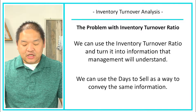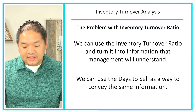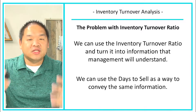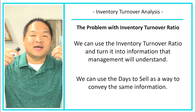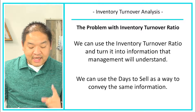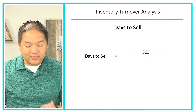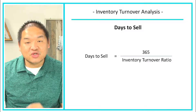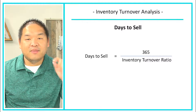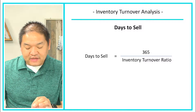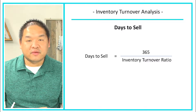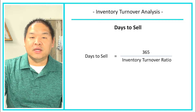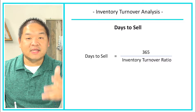We can use something called 'days to sell' as a way to convey the same information — just in a format that management will understand. The way to calculate it is to take 365 and divide it by the inventory turnover ratio we just calculated. So 365 divided by the inventory turnover ratio gives us the answer in days rather than times per year.